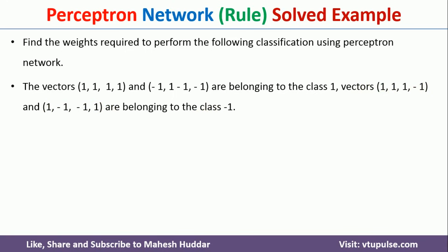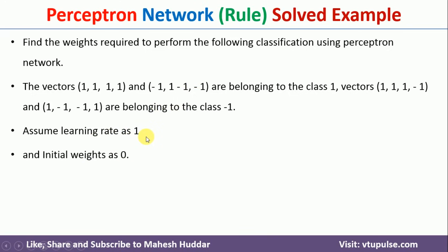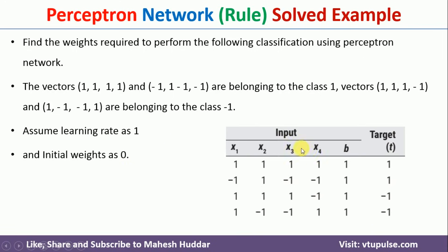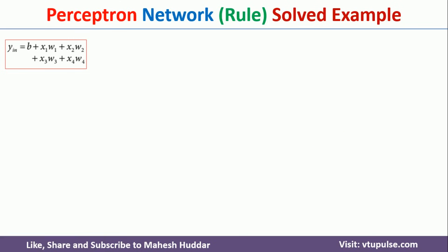We need to use the perceptron learning rule to find the optimal weights to classify this data properly. We assume the learning rate as 1 and initialize all weights including bias to zero. The input data is written in table form with four inputs and t as the target. The net input to a neuron is calculated using: y_in = b + x1*w1 + x2*w2 + x3*w3 + x4*w4, where b is the bias, x1–x4 are inputs, and w1–w4 are the associated weights.